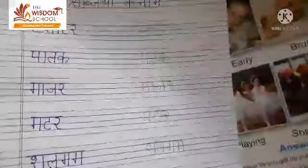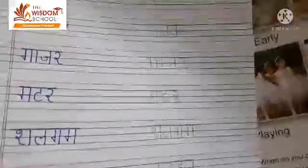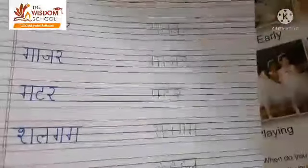Now you have to write these words by saying them aloud — two times: one, two. Aise write karo ga aap. Thik hai bachay. We will meet soon in our next class. Bye bye.